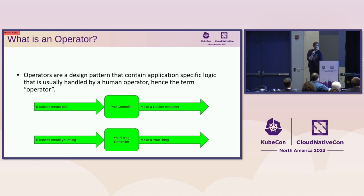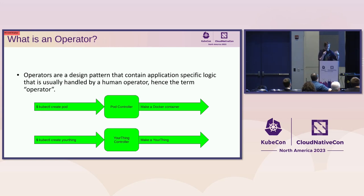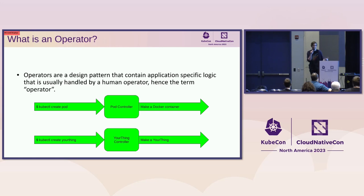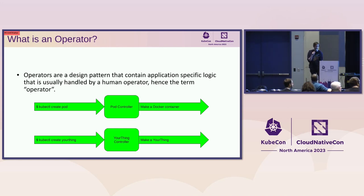If you don't even know what an operator is, I'm going to give you the two-minute summary to help you understand the rest of what I'm talking about. Operators are a design pattern for creating software that runs on top of Kubernetes. Rather than statically deploying your software in a pod and hoping Kubernetes will recreate it if it blows up, you want to encapsulate application-specific knowledge in a controller. We call it an operator because the functions it replaces are usually the domain-specific knowledge encapsulated by a human operator.